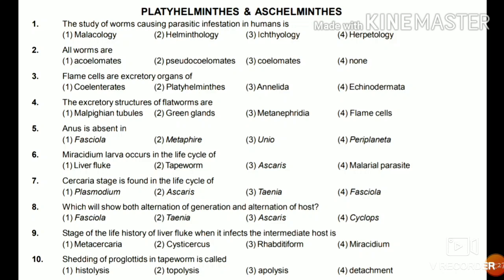Question 3: Flame cells are excretory organs of cylindrates, Platyhelminthes, Annelida, or Echinodermata? Flame cells are the characteristic features of the Platyhelminthes group. Question 4: The excretory structure of flatworms are malpighian tubules, green gland, metanephridia, or flame cells? The answer is flame cells.